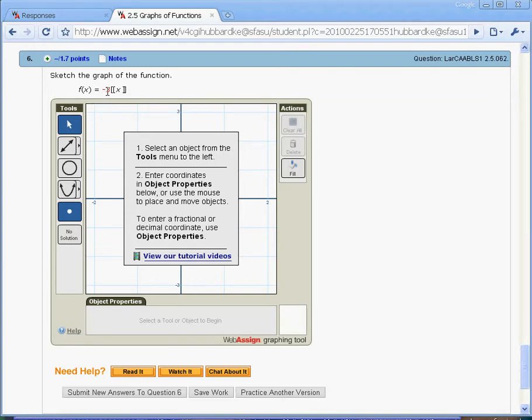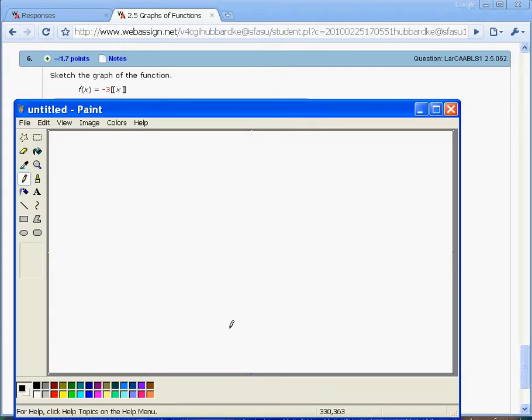f of x equals negative 3 floor of x. So I think the first part you've got to do is understand what that function looks like. It looks more or less like this. Let me just draw an xy axis.